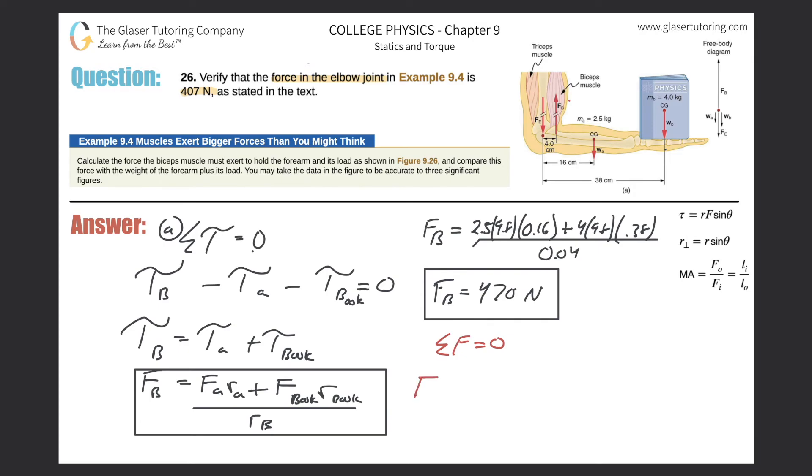So we have the force of the bicep, which is pointing upward. That's positive right here, minus then the force at the elbow, which is pointing down, minus the weight of the arm, minus the weight of the book. They're all pointing down, should all equal then zero. So the force at the elbow should equal then the weight of the arm, plus the weight of the book, minus the force on the bicep.